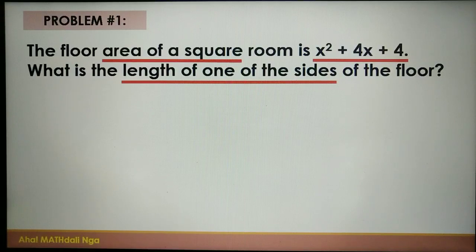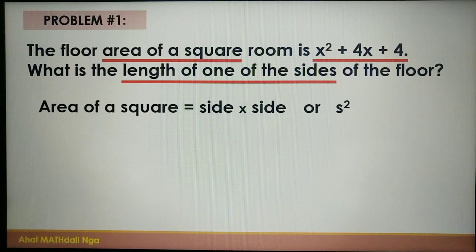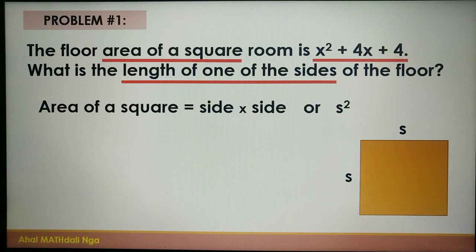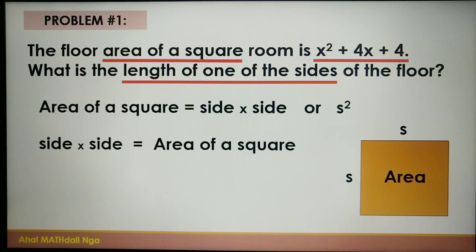Remember the formula for finding the area of a square: area of a square is equal to side times side, or s squared. By illustration, we have a square with side s. To find the area of a square, we multiply the two sides. So side times side is equal to the area of a square. We will substitute x squared plus 4x plus 4, which is the area of the square.